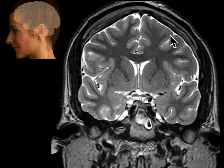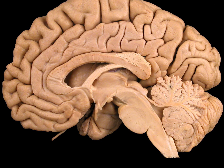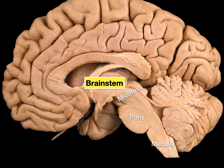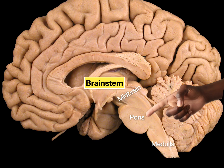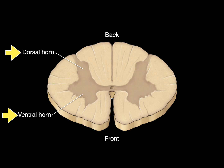Now let's go back rostrally. Here's a mid-sagittal section of the brain. The brainstem consists of the midbrain, pons, and medulla, and below that is the spinal cord. The midbrain is rostral to the pons, and the pons is caudal to the midbrain. Looking at a cross-section of the spinal cord, anatomists see gray matter forming two horns — the one towards the front is the ventral or anterior horn, and towards the back is the dorsal or posterior horn.